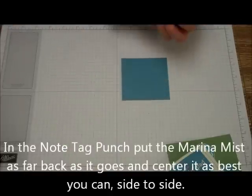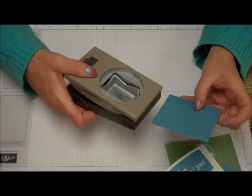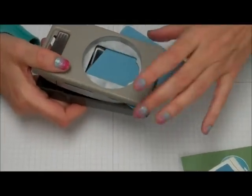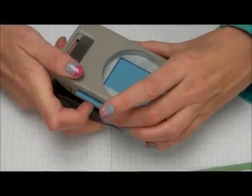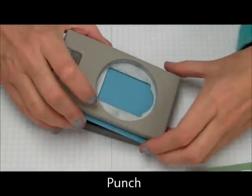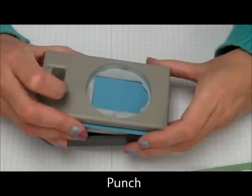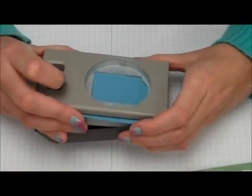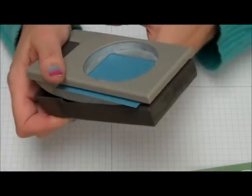So the first thing we're going to do is take this piece of Marina Mist and the note tag punch. We're going to center this, put that three and a quarter inch back as far as possible and eyeball the center so it centers into that punch from both sides, and then we're just going to punch it.